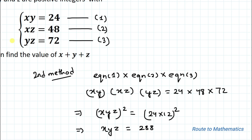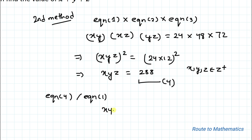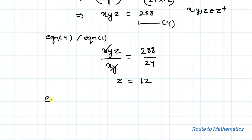We have neglected the negative value since x, y, z are positive integers. Now to find z, let's divide equation 4 by equation 1: xyz ÷ xy = 288 ÷ 24. Here xy cancels out, so z = 12.